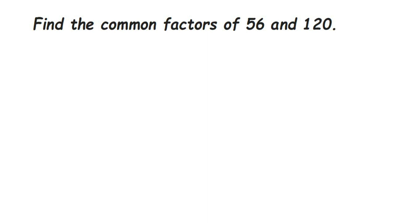Hey everyone, the question is: find the common factors of 56 and 120. Factors are numbers which can completely divide 56 — in other words, numbers whose tables 56 goes into. Those numbers will become factors of 56, and similarly for 120. There are many ways of finding factors. Since 56 is less than 100, we'll check up to the 10 times tables. We'll find factors of 56 first, then 120, then find the common factors.